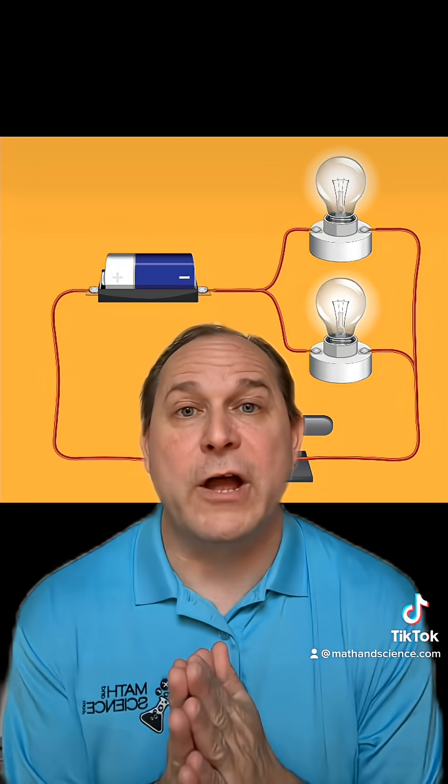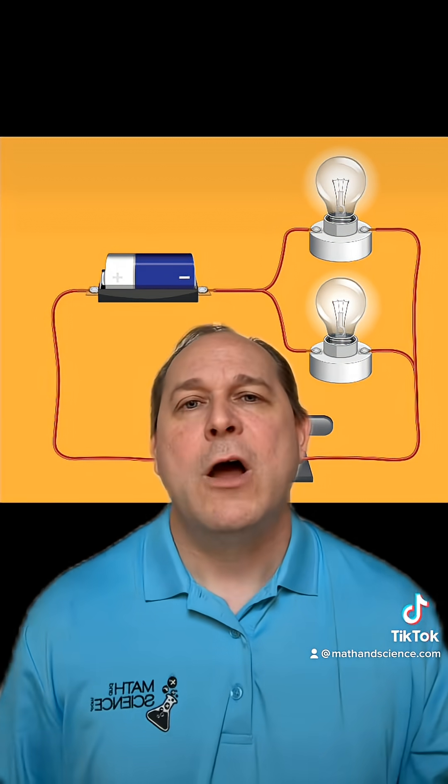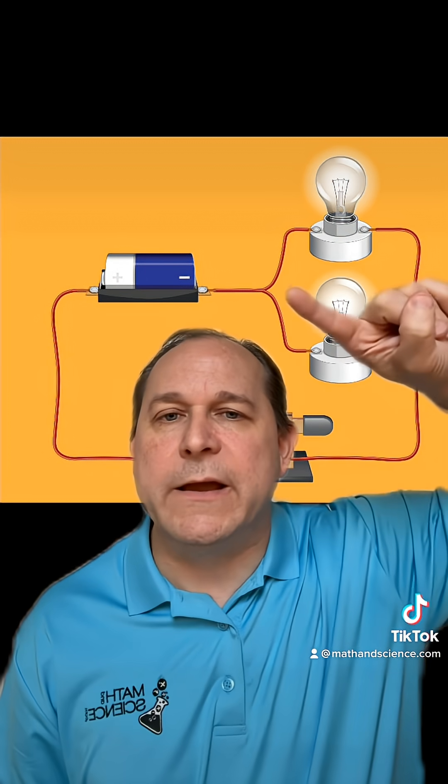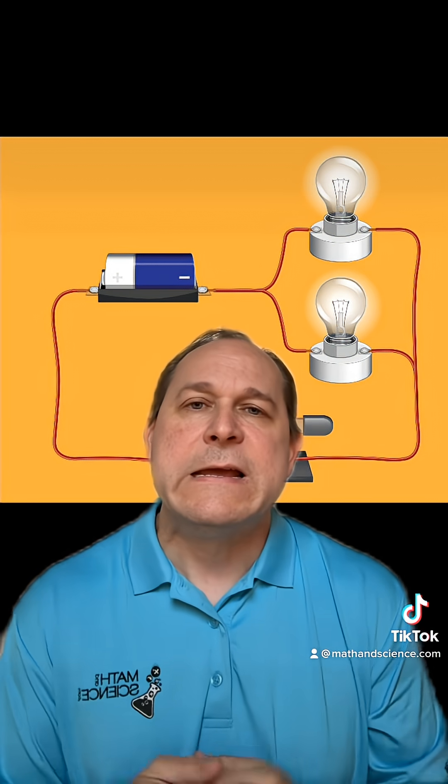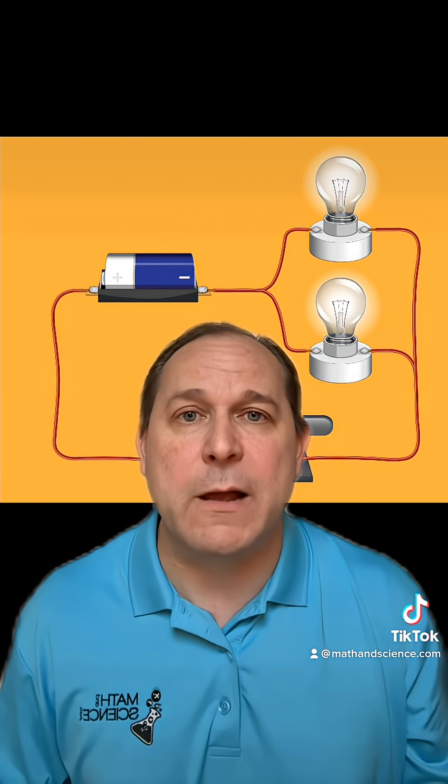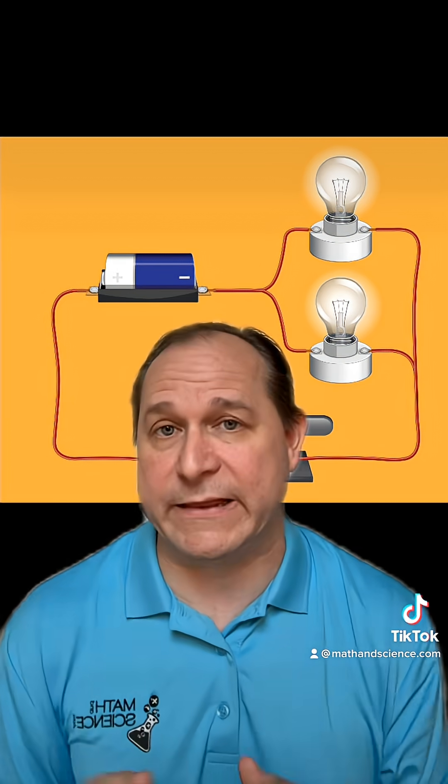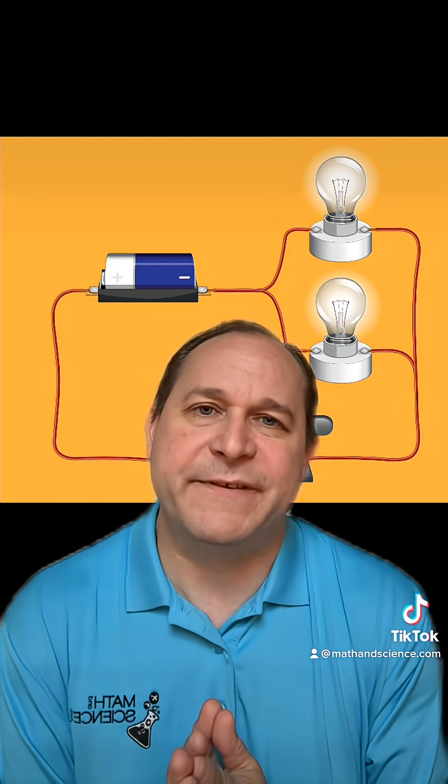So Kirchhoff's current law is very simple in principle. All it basically says is that any node or any connection point intersection of different circuit branches in a circuit, like this would be a node right here at this connection point, the algebraic sum of all of the currents entering the node and leaving the node has to add up to zero.